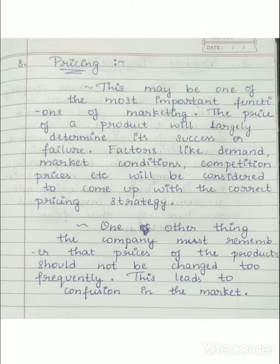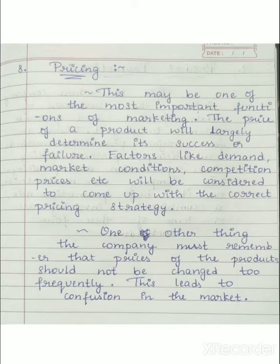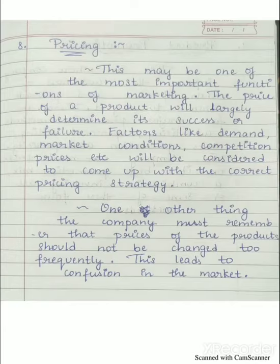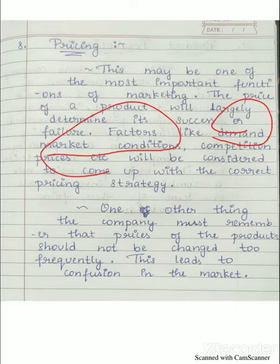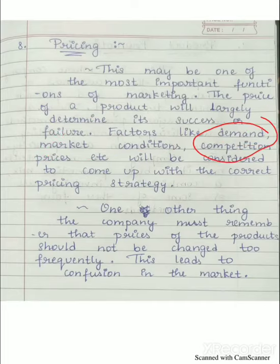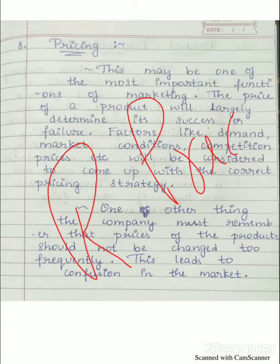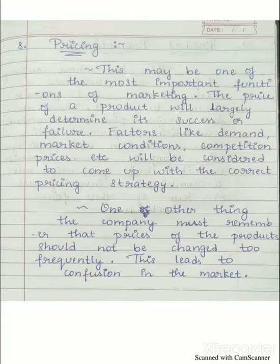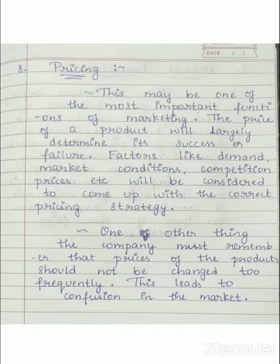The next function is pricing. Fixation of the correct pricing strategy is one of the critical functions of marketing because price fixation is not an easy job. After analysis of demand, market conditions, and even competition prices, we have to fix one reasonable price. Only then is success possible. Without analyzing these factors, it is not possible to fix the price. So fixation of price is also one of the critical functions of marketing.